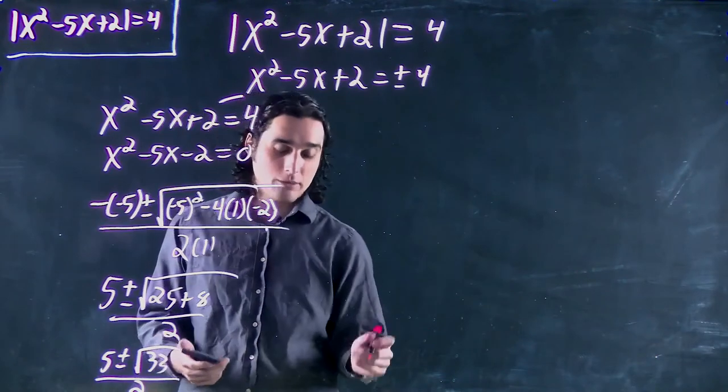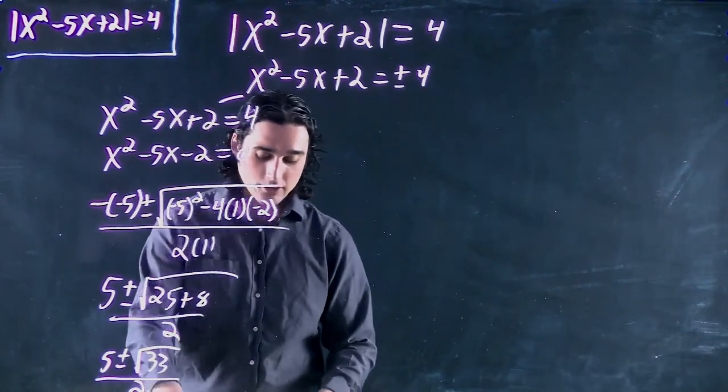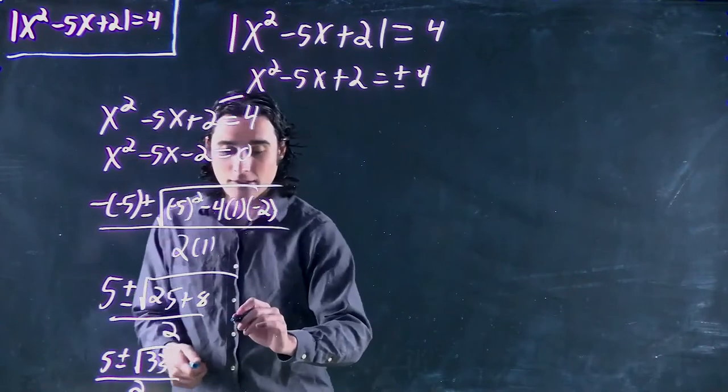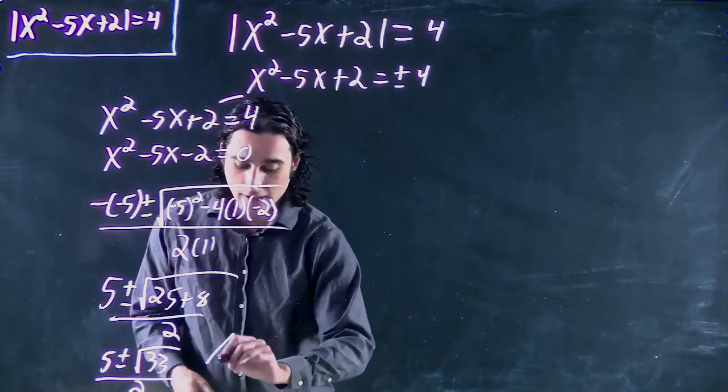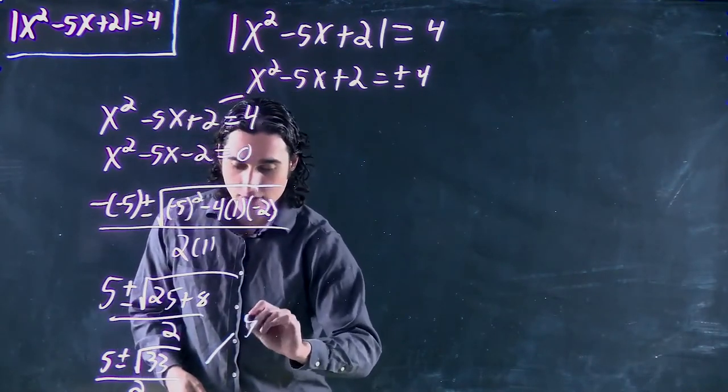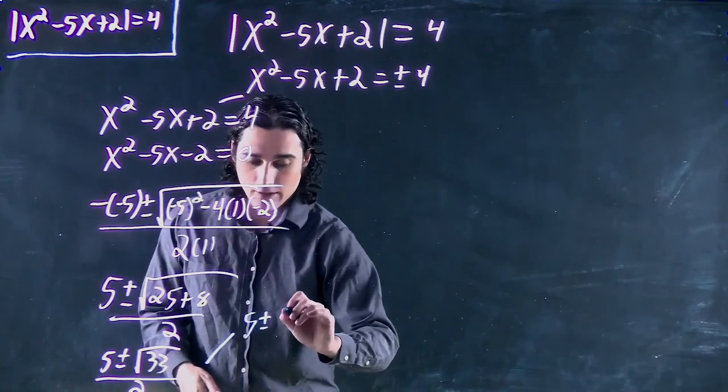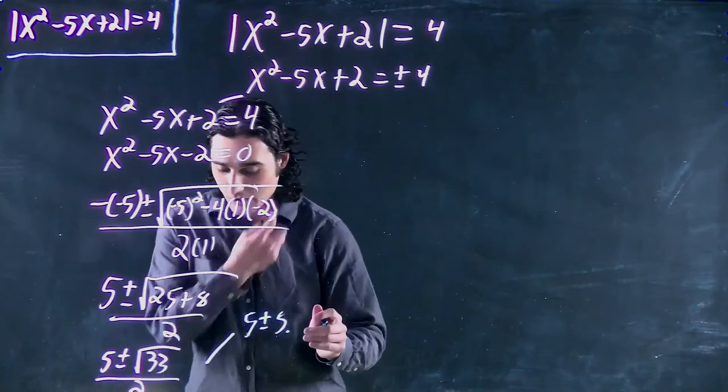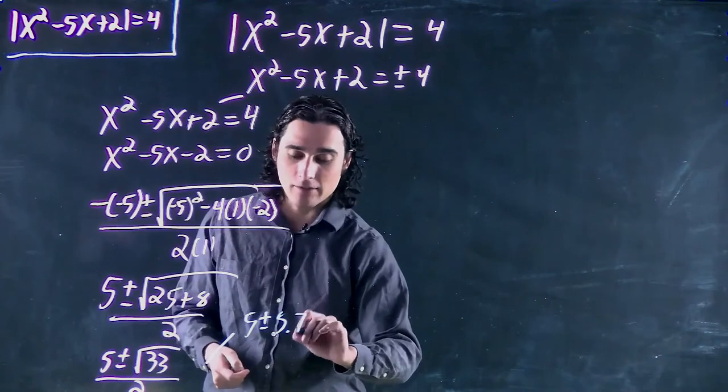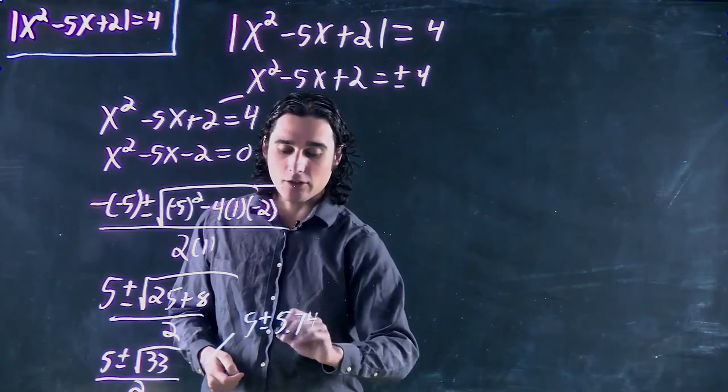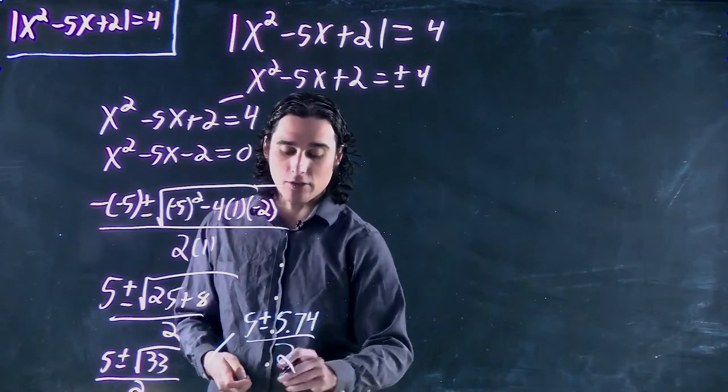So we have 5. Again, this becomes two viable solutions. Let's switch colors to help start clarifying us a bit. Because we got 5 plus or minus 5.7. I'm just going to round off to the second decimal for now. Get an approximate answer, but it'll be good enough for our purposes.